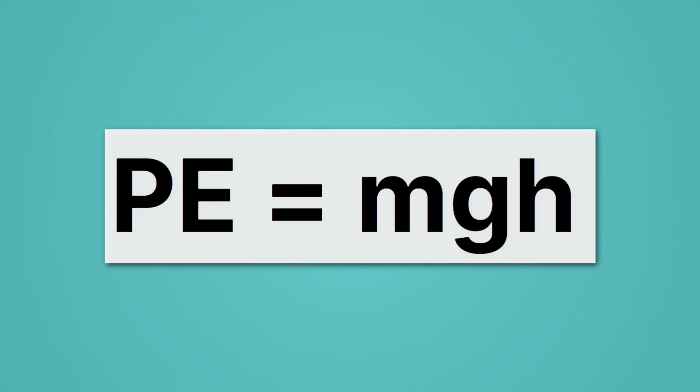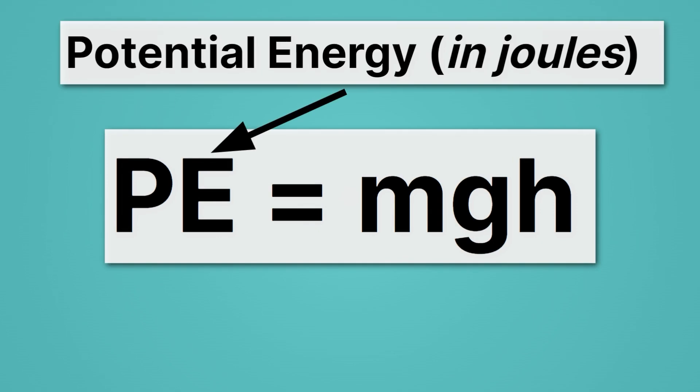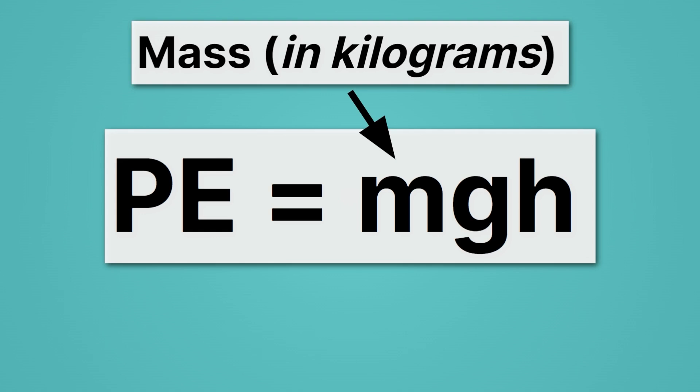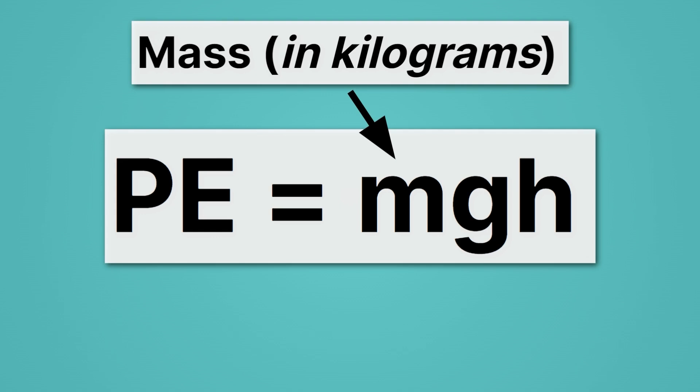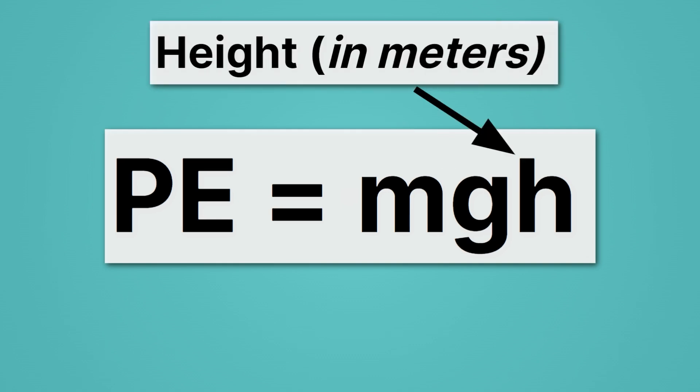Here's the equation specifically for gravitational potential energy. PE stands for, drum roll please, you guessed it, potential energy. And that's going to be in joules, the standard unit we always use for energy. What do you think the M stands for? That's right, it's mass. And specifically, it's mass in kilograms. Next up, we have G, and that's the gravitational acceleration. It's always 9.81 meters per second squared. The H stands for height, because as you get higher, you gain potential energy.